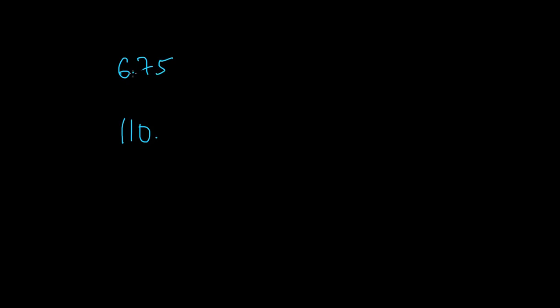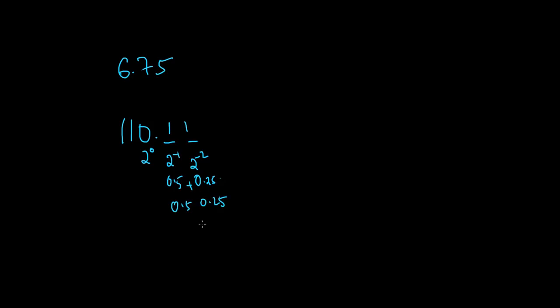The decimal point positions are 2 raised to 0, 2 raised to 1, 2 raised to 2 to the right. 1 divided by 2 is 0.5, and 1 divided by 4 is 0.25. So 0.75 equals 0.5 plus 0.25, giving us binary 0.11. The total answer is 0.75, and we call this the decimal fixed-point binary notation 0.11.